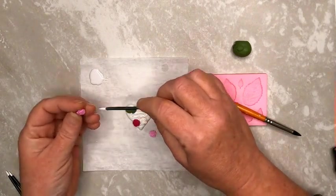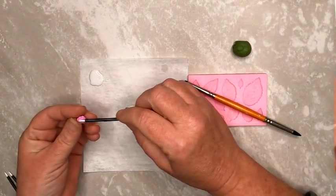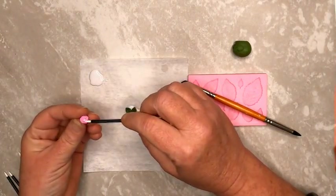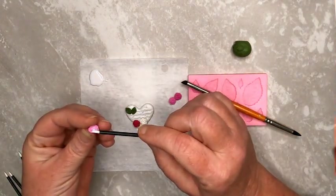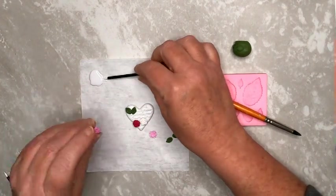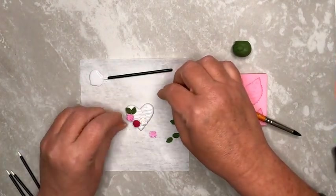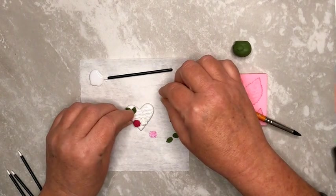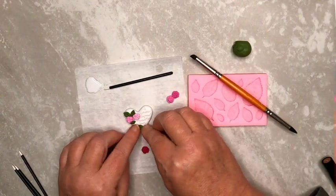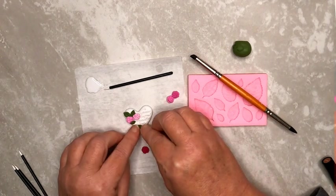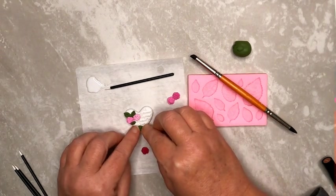Then use the applicator to apply liquid clay to the back of one of the baked roses. Be pretty generous with the liquid clay. It really helps when you're trying to adhere the cured roses to the uncured heart. Continue adding leaves and roses until you're happy with your design.